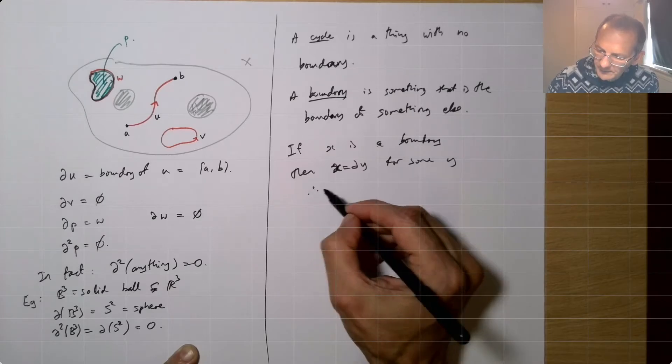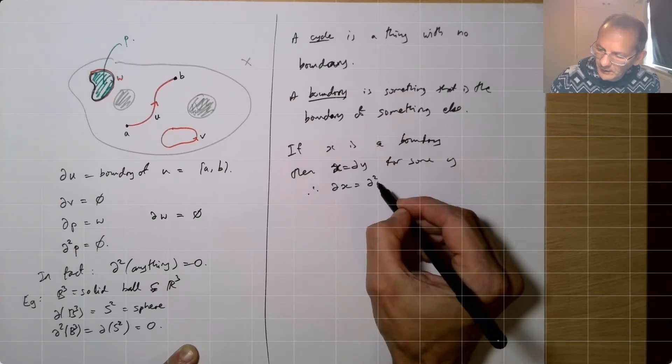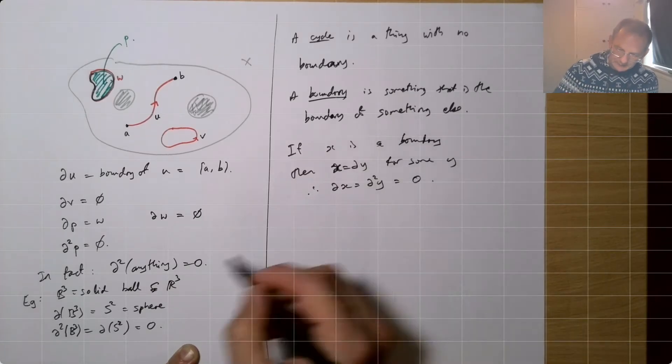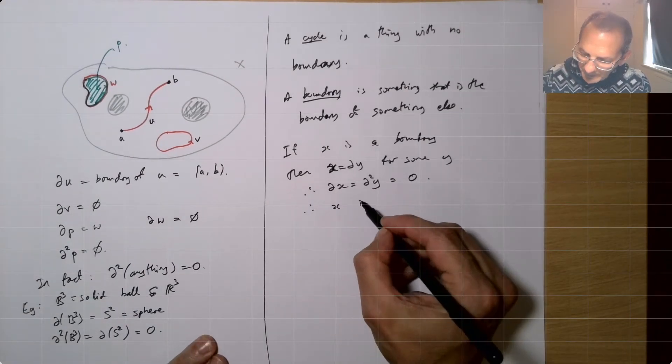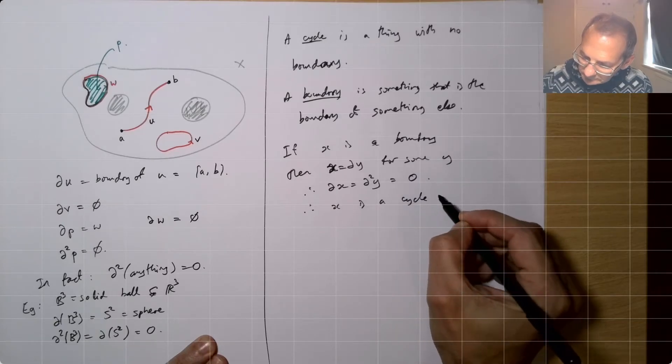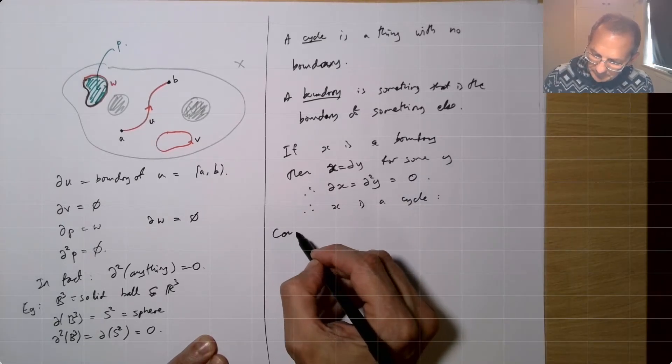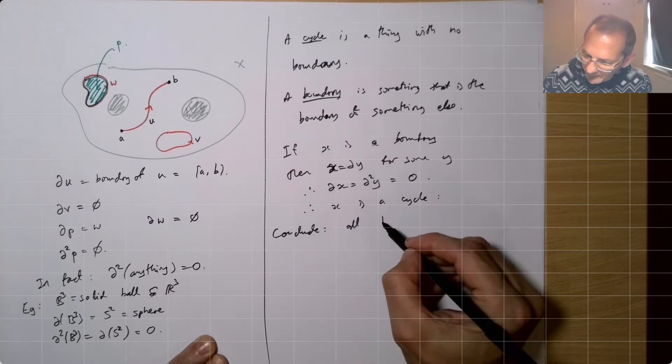So dx is d squared y, which is zero. By what we've kind of said here, the boundary of a boundary is always going to be zero. Therefore, x is a cycle. So conclude all boundaries are cycles.